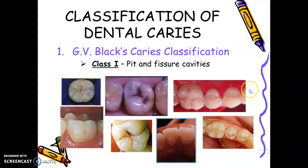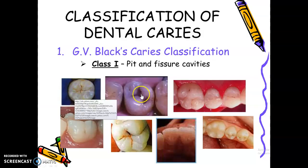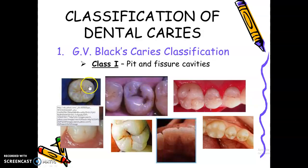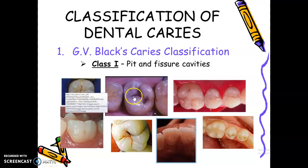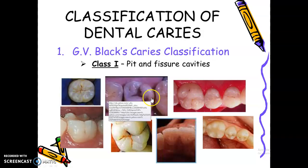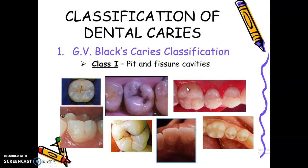Class 1 refers to pit and fissure cavities. You can find fissures on the occlusal surface of posterior teeth — molars and premolars. We can also find Class 1 cavities on the palatal or lingual surface of maxillary posterior teeth, and on the buccal surface of mandibular posterior teeth — specifically the mandibular molar, known as buccal pit caries.